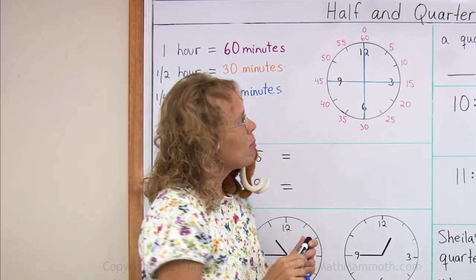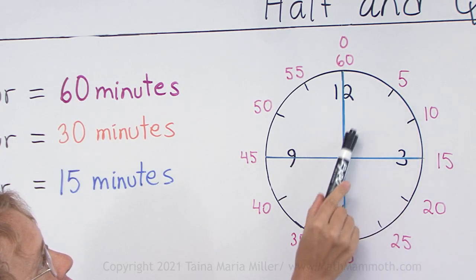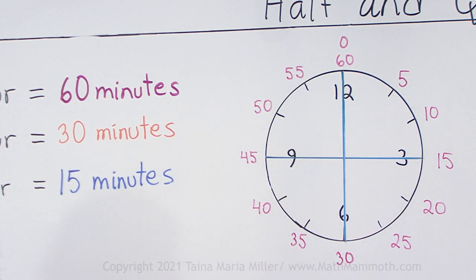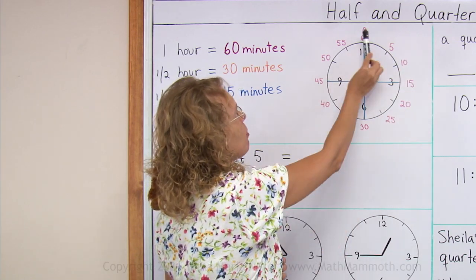Now those red numbers over here are for the minute hand. And you remember how the minute hand pointing here would mean five minutes past something. 5, 10, 15 and so on, they go all the way up to 60 minutes.